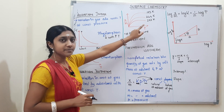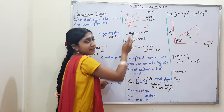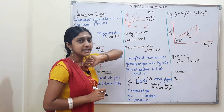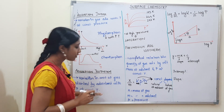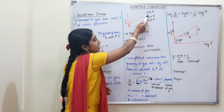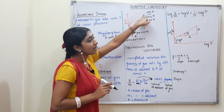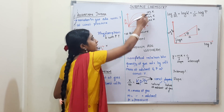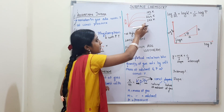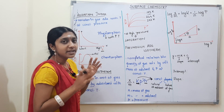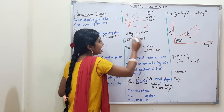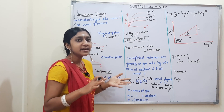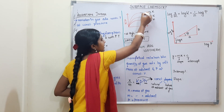In the isotherm graph, pressure is on the x-axis and x/m on the y-axis. Three different temperature curves are shown — for example at 195 K, 244 K, and 273 K. Low temperature gives higher adsorption. As we know, adsorption decreases with increase in temperature, so the lowest temperature curve is highest. At high pressure, adsorption reaches saturation.